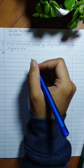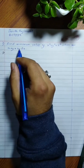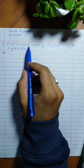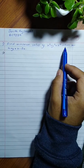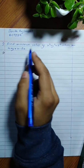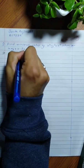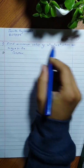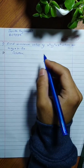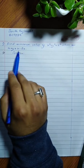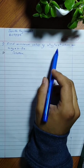Good morning sir. Today we will be doing two questions. Our first question will be: find the minimum value of x squared plus y squared plus z squared when x plus y plus z equals 3a. What we are trying to find is the minimum value of this function, given one condition and three unknown variables.